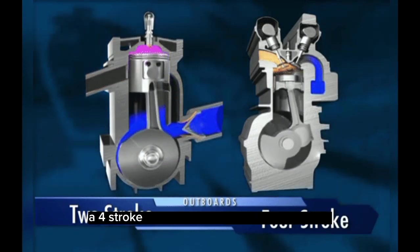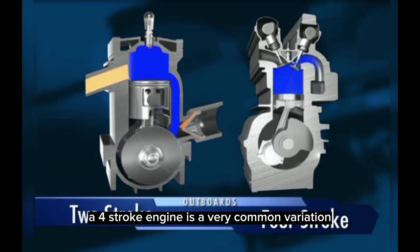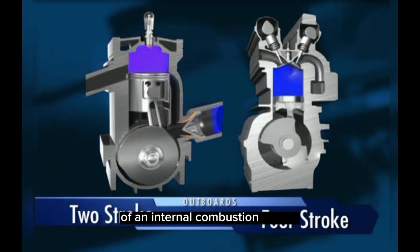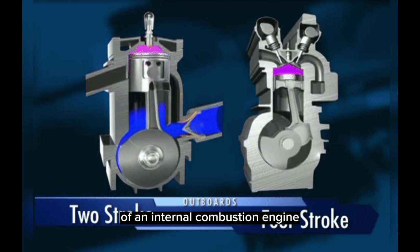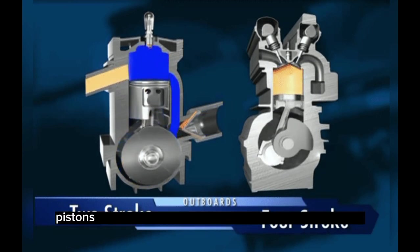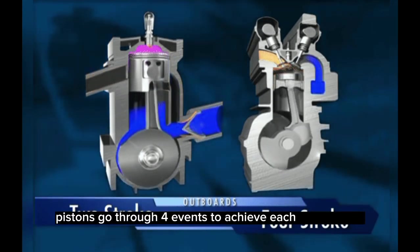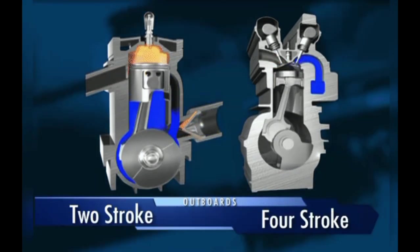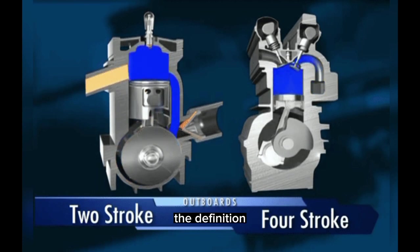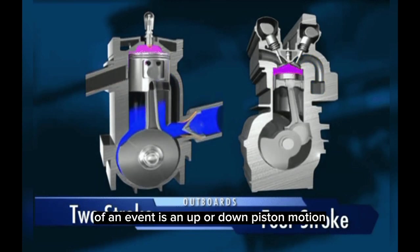A four-stroke engine is a very common variation of an internal combustion engine. During engine operation, pistons go through four events to achieve each power cycle. The definition of an event is an up or down piston motion. Upon completion of the four events, the cycle is complete and ready to begin again.